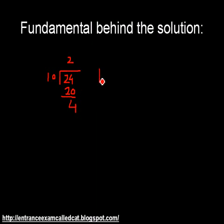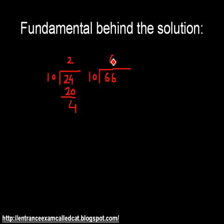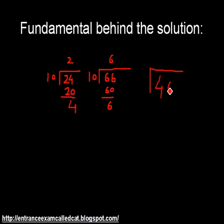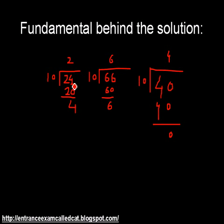Let us see another number. For example, say 60. If we divide it by 10, we get 6 as a remainder. What if the number ends in 0? For example, the number 40 — if you divide it by 10, then 10 fours are 40, so the answer will be 0. If you see all three divisions, you will realize that the unit digit of the given number and the remainder are always the same when you divide the number by 10.